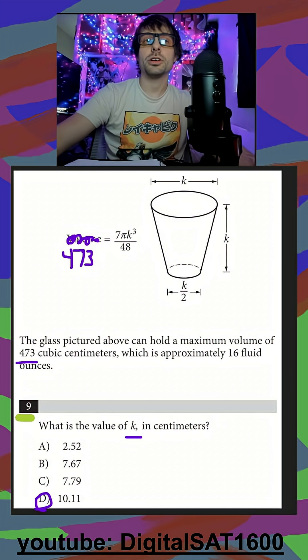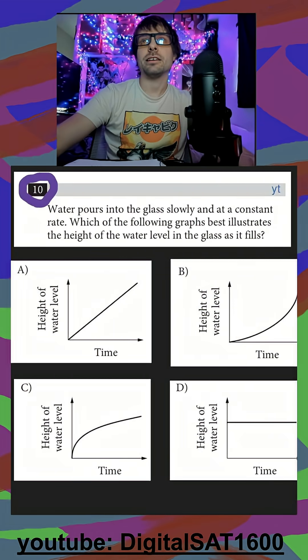And for part two, because it's connected to this cup, they're asking us if we're pouring water into this glass at a constant rate, which of the following graphs best illustrates the height of the water.